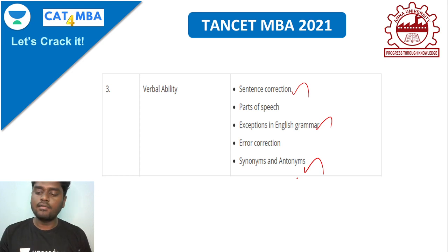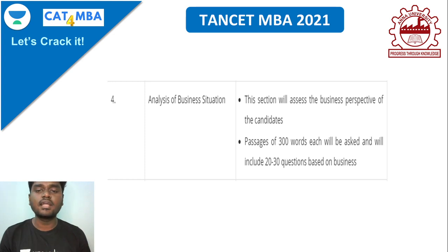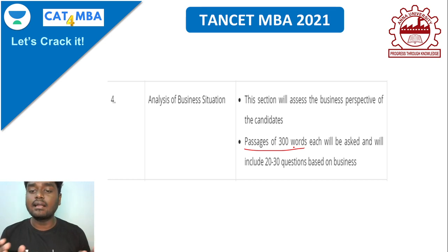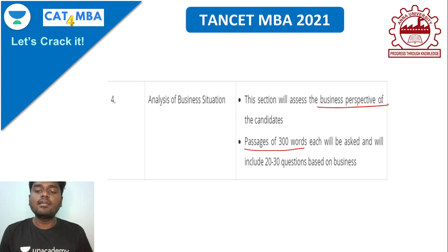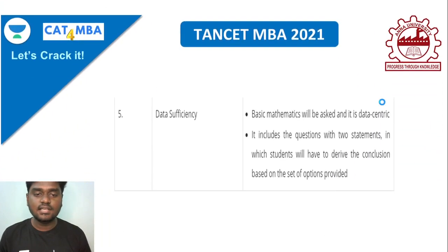The fourth section is Business Analysis. They will give you a passage of around 300 words, and you need to go through it and properly analyze it. The passage will be fully oriented towards a business perspective, and you'll be asked 20 questions based on that passage. You need to answer them by analyzing the content from a business point of view.